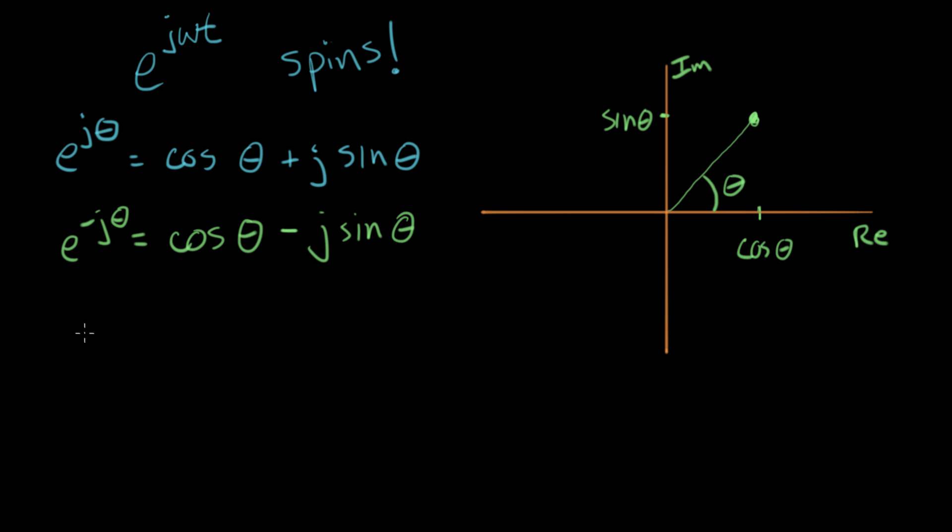One of the things we can ask is, what is the magnitude of e to the j theta? And if I put absolute value or magnitude bars around that, what that says is, what is this value here for R? And we can figure that out using the Pythagorean Theorem. What we know is this squared equals the x value squared, which is cosine, plus the y value squared, which is sine theta.